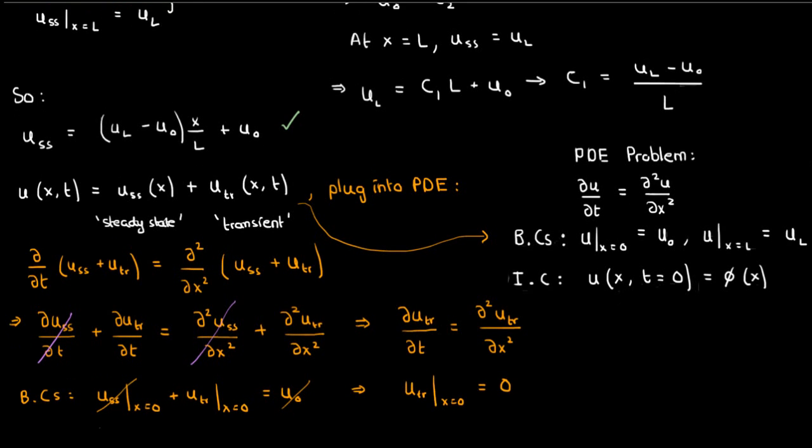Similarly for x equals L, we have u_ss at x equals L plus u_tr at x equals L equals u_L. But our steady state solution alone already satisfies this boundary condition, which means the boundary condition on the transient solution at x equals L is also 0.